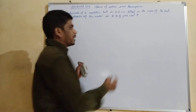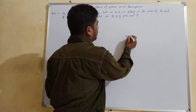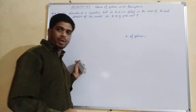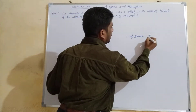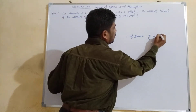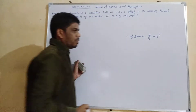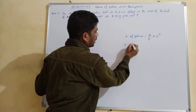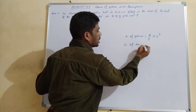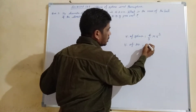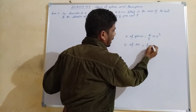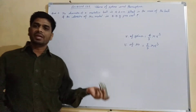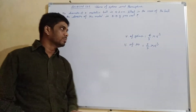The formula for volume of a sphere is 4/3 π r³, and the volume of a hemisphere is 2/3 π r³. The unit will be cubic centimeter or cubic meter because it is volume.